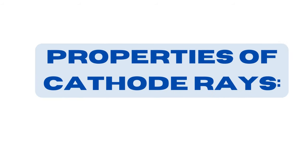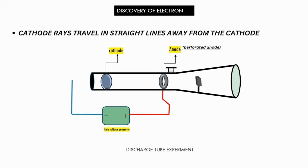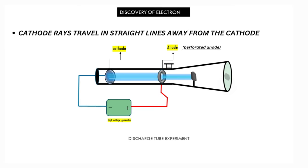Now we will dive into the experiment and understand the properties of the cathode rays. Cathode rays travel in straight lines away from the cathode. A shadow of a metallic object placed in the path is cast on the wall opposite to the cathode.